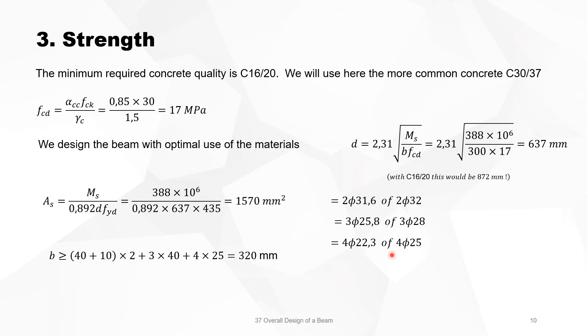So let's suppose we have 4 diameters 25, then the width you need is the concrete cover plus the stirrup times 2, left and right, plus 3 times the clear distance between the bars, 3 times 40, plus 4 times the bar size. So we need at least 320 mm, but we started with 300 mm. So the best thing now to do is that we will choose a width which is bigger, so we take 350 mm instead of 300 mm.